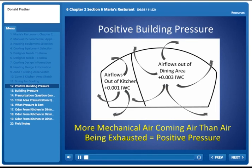We've got positive building pressure. Airflow is out of the kitchen, out of the dining room, from the dining room to the kitchen, from the kitchen to the outside, and from the dining area to the outside. More mechanical air comes in than the air that's being exhausted. That's how you positively pressurize it. That's what we're designing and running.